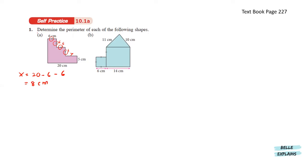As for this side, it will be the sum of these three parts. So it will be 6 plus 6 plus 5. That will give us 17 centimeters.